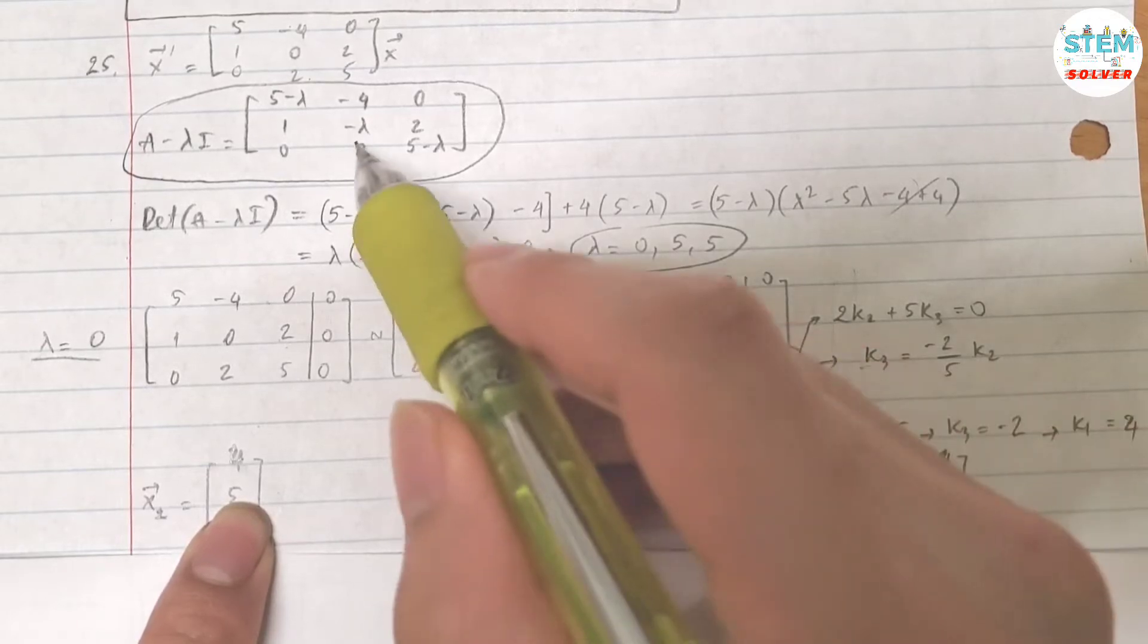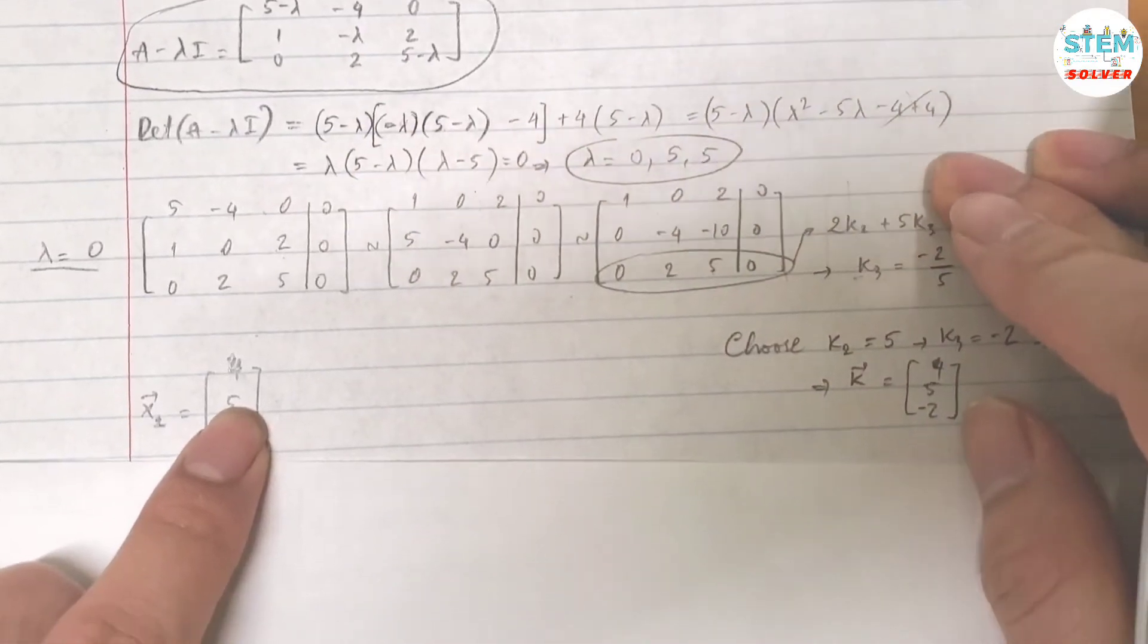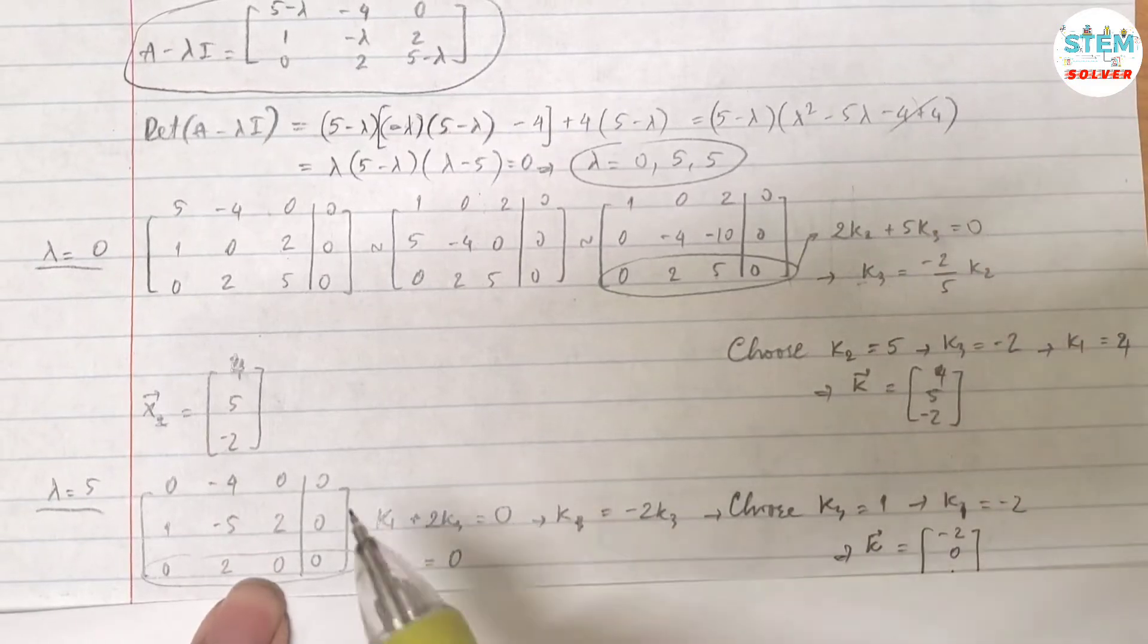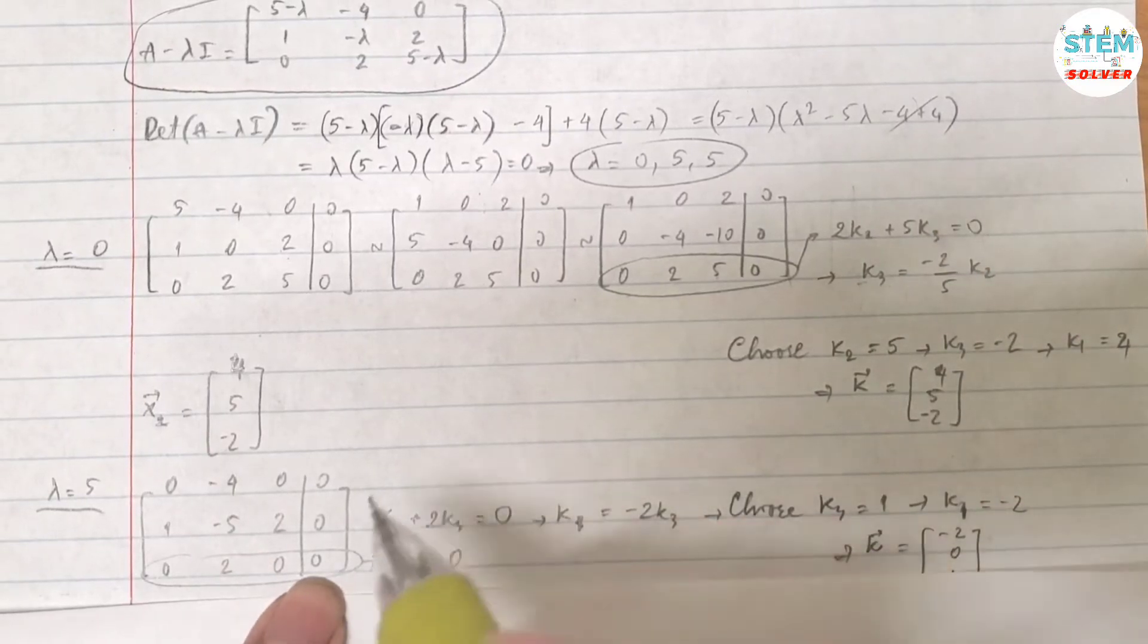Plug it into here. And then that gives you a new matrix which is this matrix. Then augment it with 0.